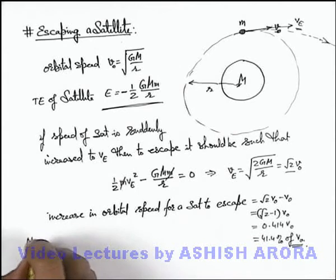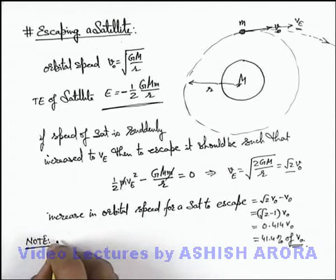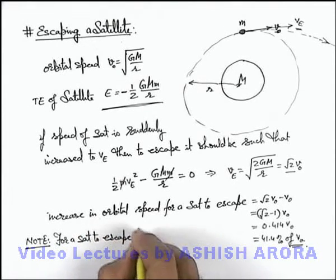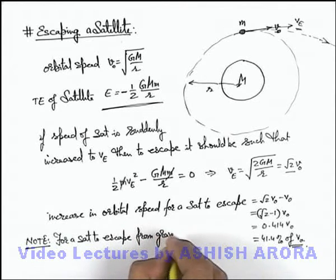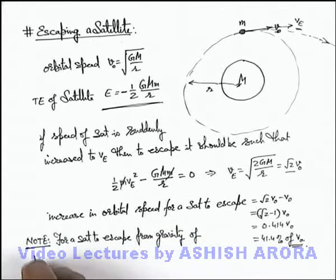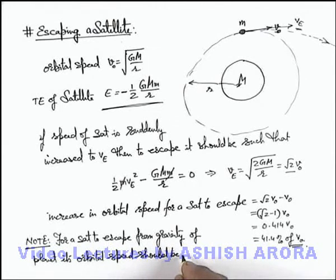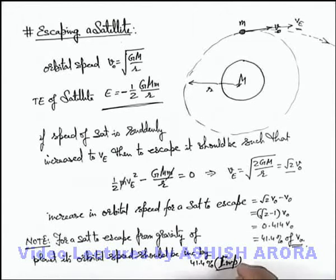That means we can write down a note here, directly just in language, that for a satellite to escape from gravity of planet, its orbital speed should be increased by 41.4 percent. And this is a general and important logic which you should always keep in mind, that approximately by 42 percent increase in orbital speed we can see that the satellite will escape from the planet around which it was orbiting.